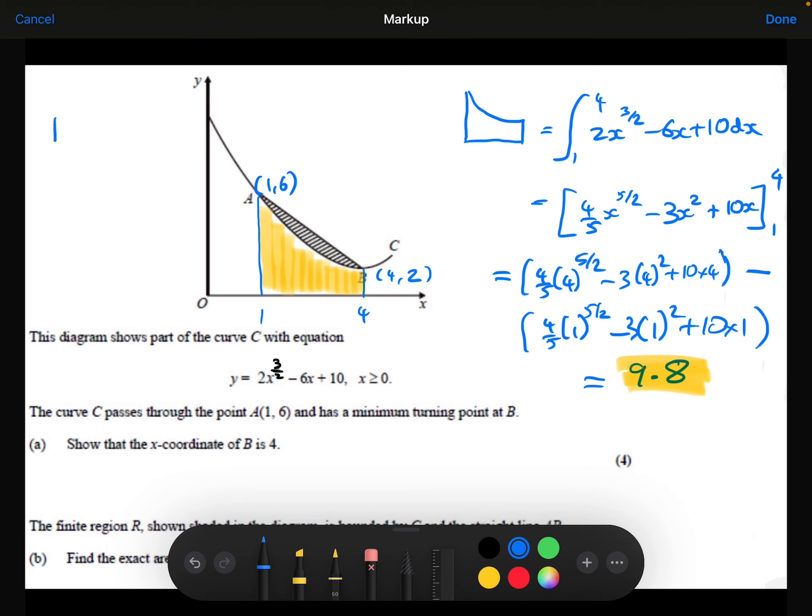Right, what about the trapezium? So this big green trapezium here. Well, remember that the formula for the area of the trapezium is a half A plus B times H, where A and B are the parallel lengths, and H is the distance between them. In this case here, my A is 6 because it's the y-coordinate of point A, and B is 2 because it's the y-coordinate of point B, and H is the distance between them, which is 3.